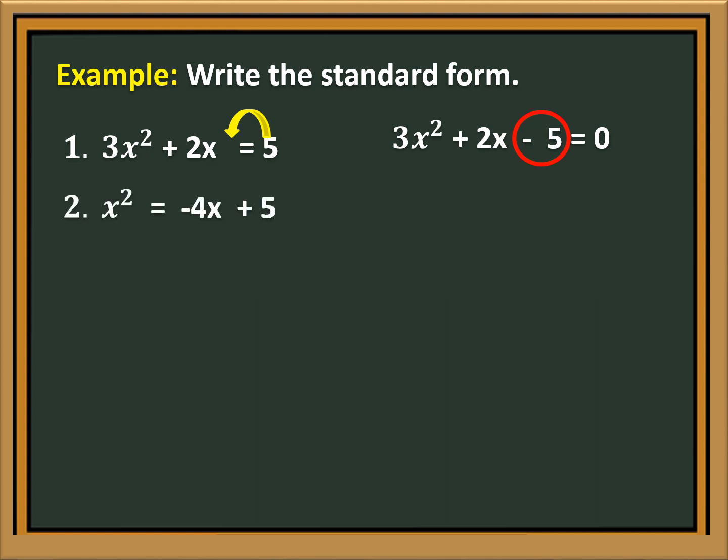Next is x squared is equal to negative 4x plus 5. We are going to transpose negative 4x plus 5 to the left side of the equation, so 4x will become positive and 5 will become negative. Therefore, we will have x squared plus 4x minus 5 is equal to 0.